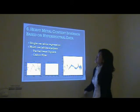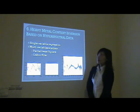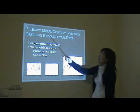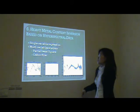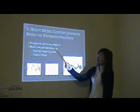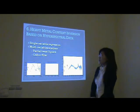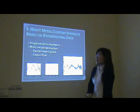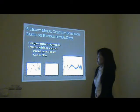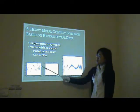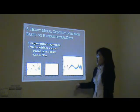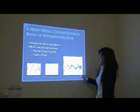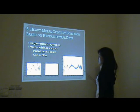The sixth part is heavy metal content inversion based on hyperspectral data. It aims to invert the heavy metal content from hyperspectral curve measurements on the ground. It usually uses single-variable regression and multi-variable regressions. In multi-variable regressions, the most common method is partial least squares. But the coefficients from partial least squares are not stable. So, I apply a wavelet filter and achieve more stable and more robust coefficient results.